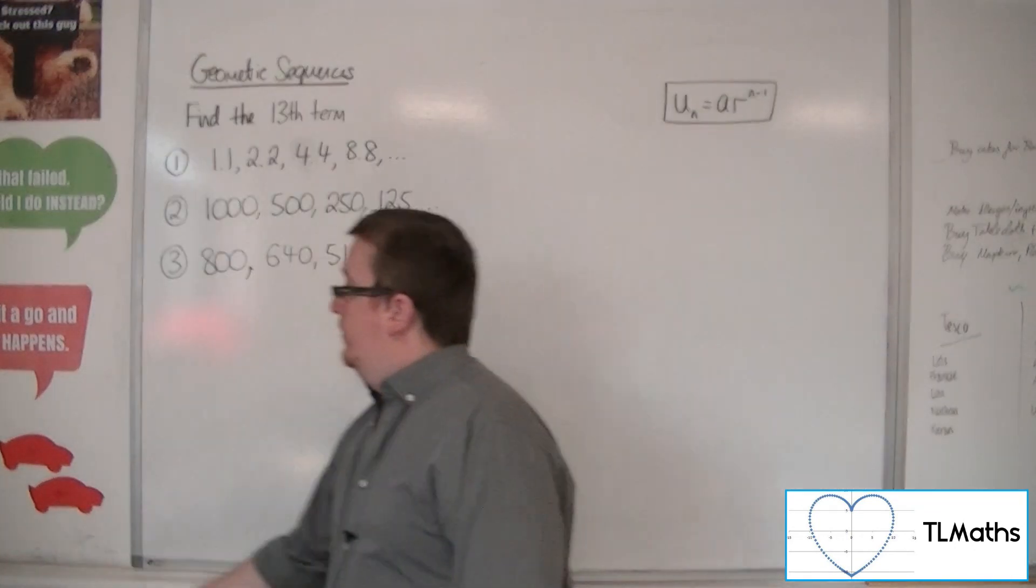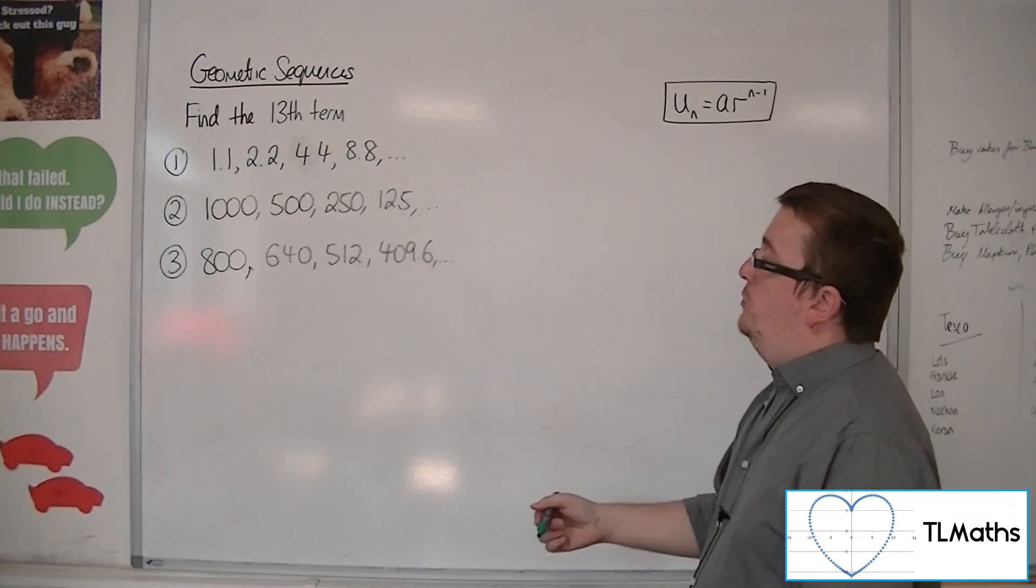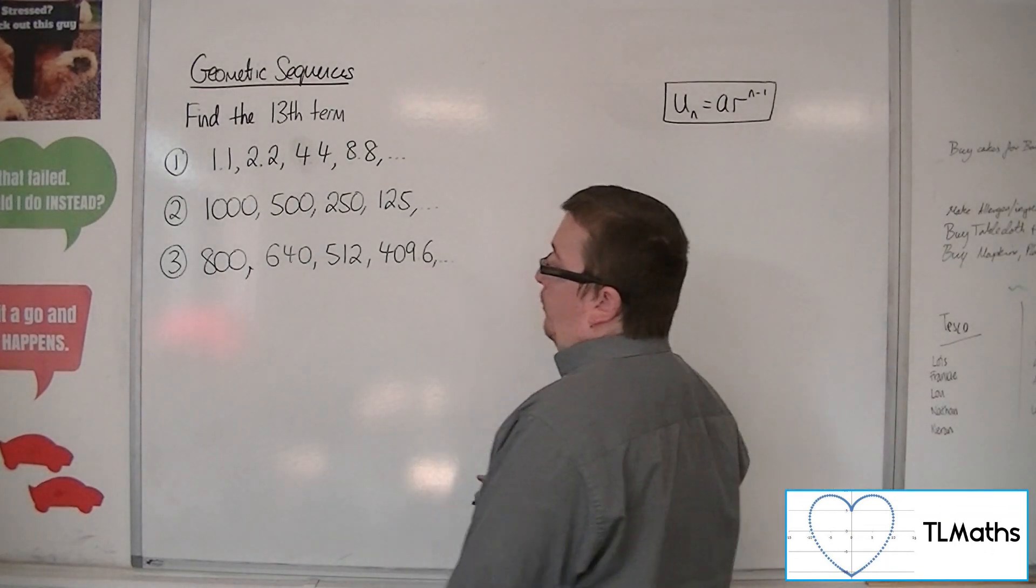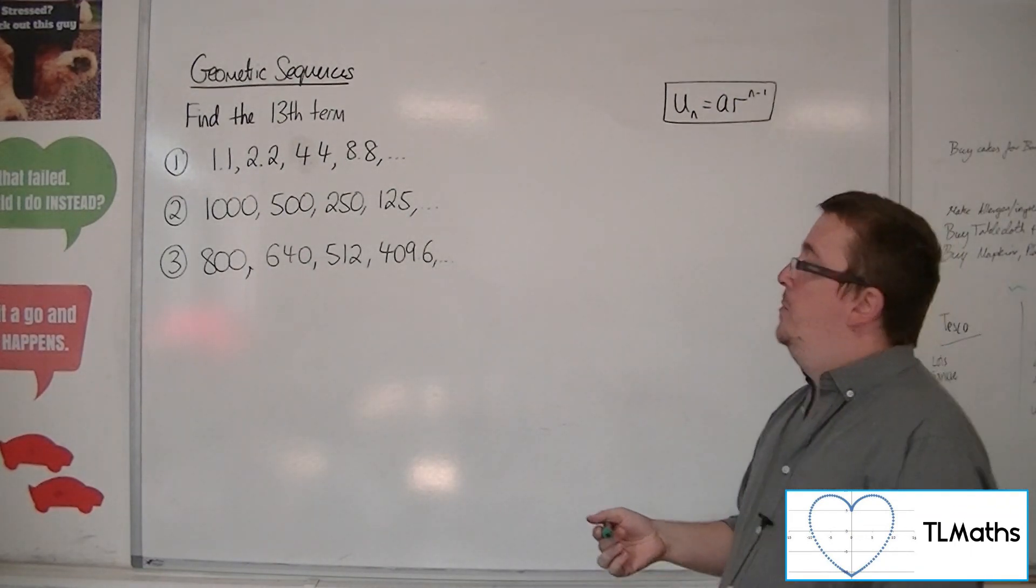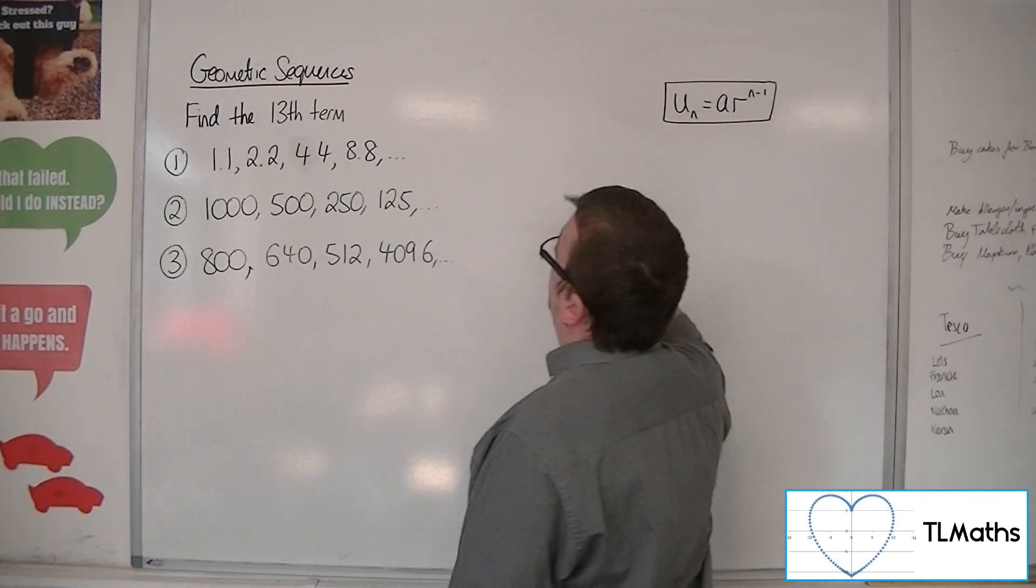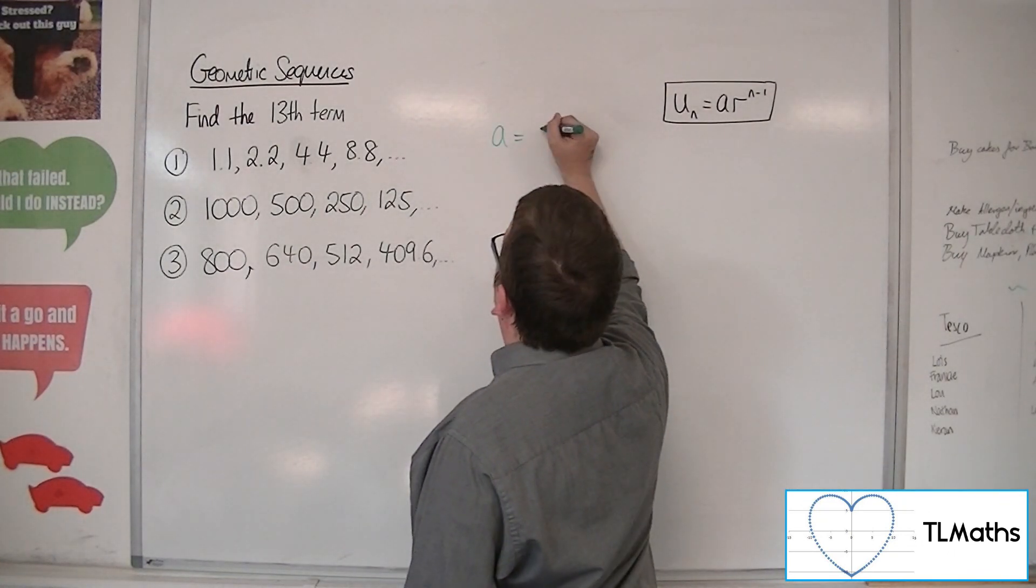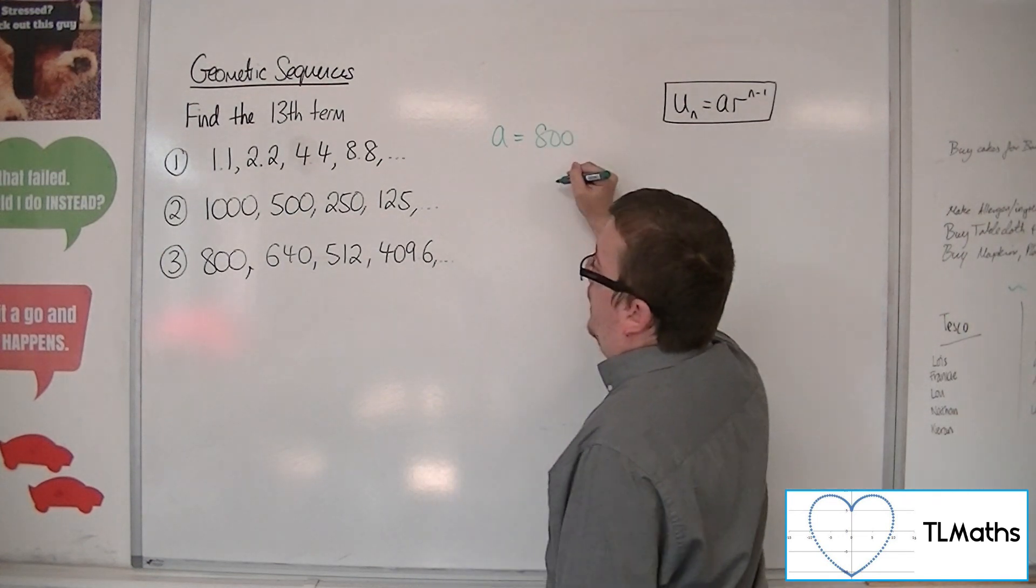So then number 3. 800, 640, 512, 409.6. Not so obvious as to what the common ratio is this first time. So a is 800.